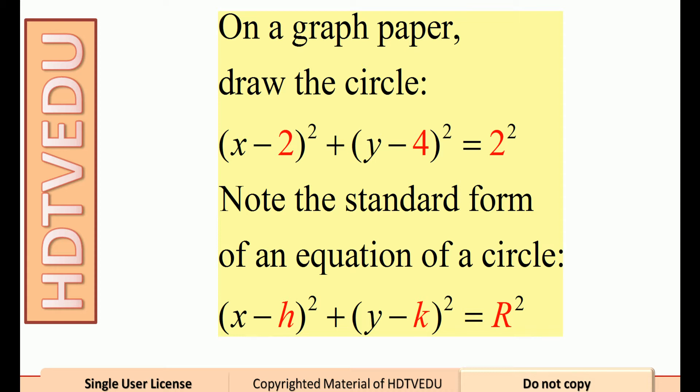Note the standard form of an equation of a circle: x minus h squared plus y minus k squared equals radius r squared.